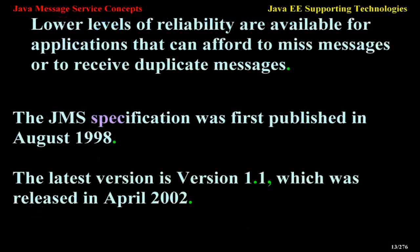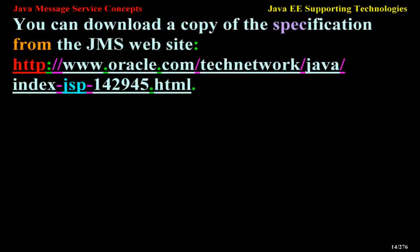The JMS specification was first published in August 1998. The latest version is version 1.1, which was released in April 2002. You can download a copy of the specification from the JMS website at http://oracle.com/technetwork/java.